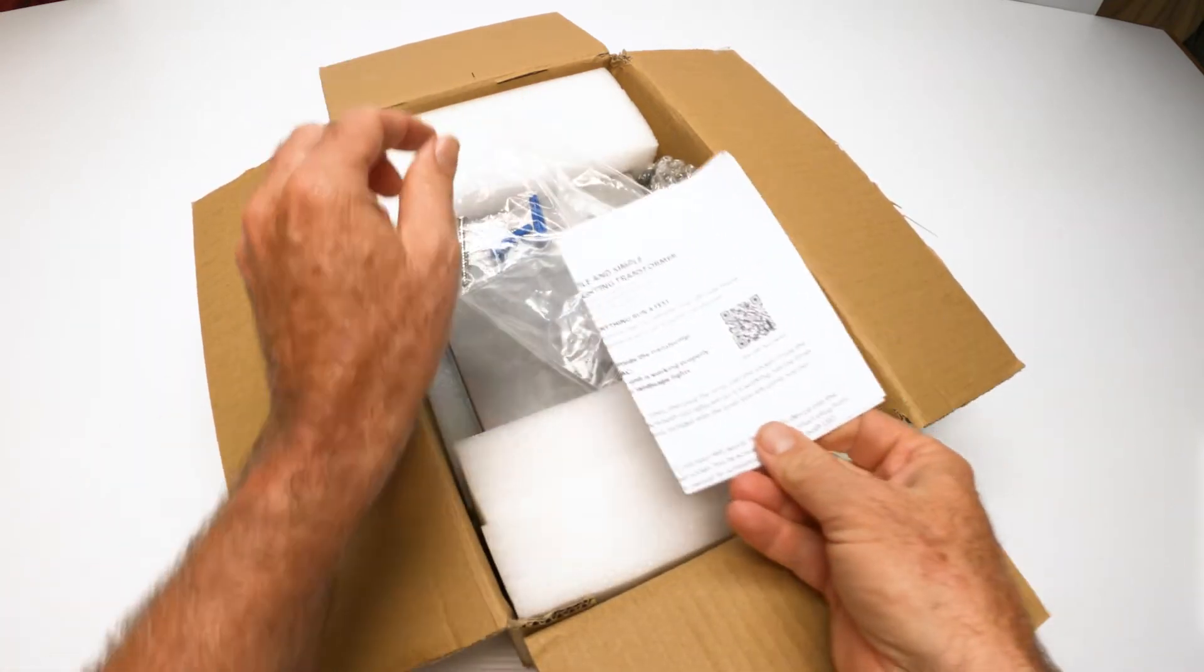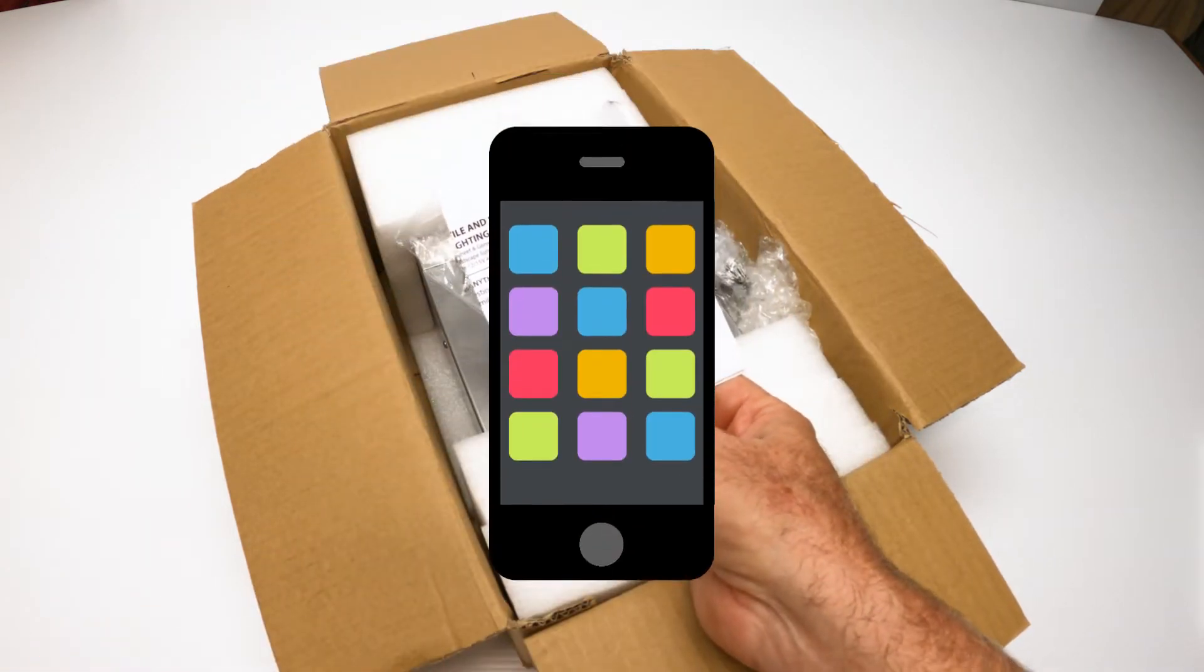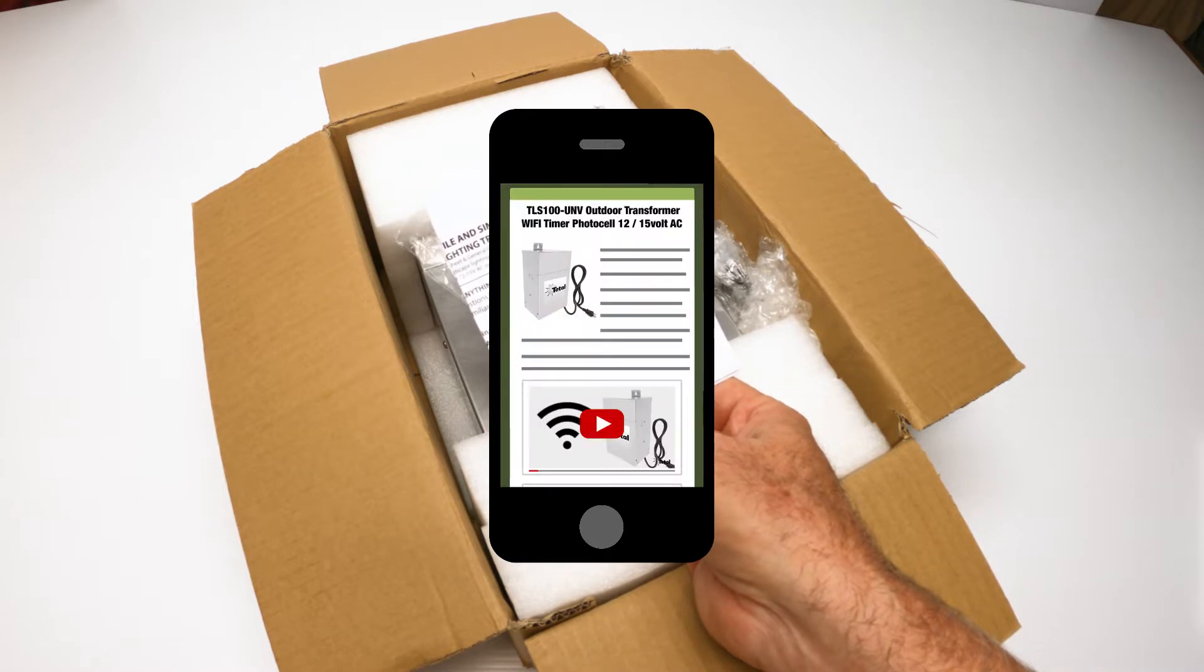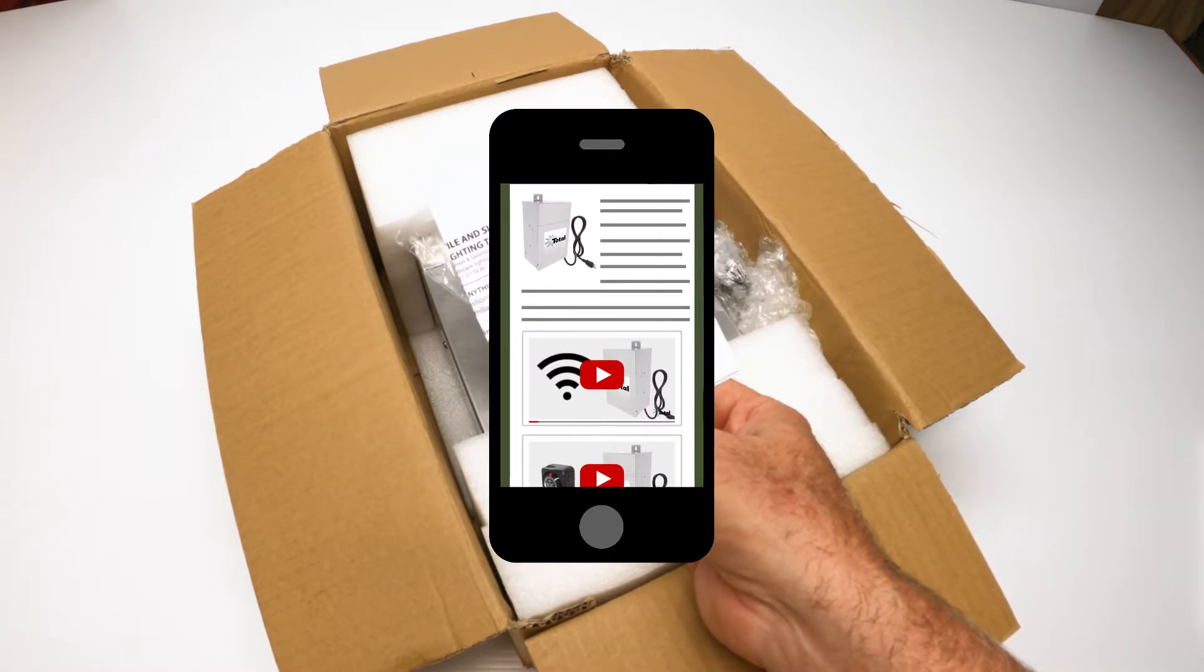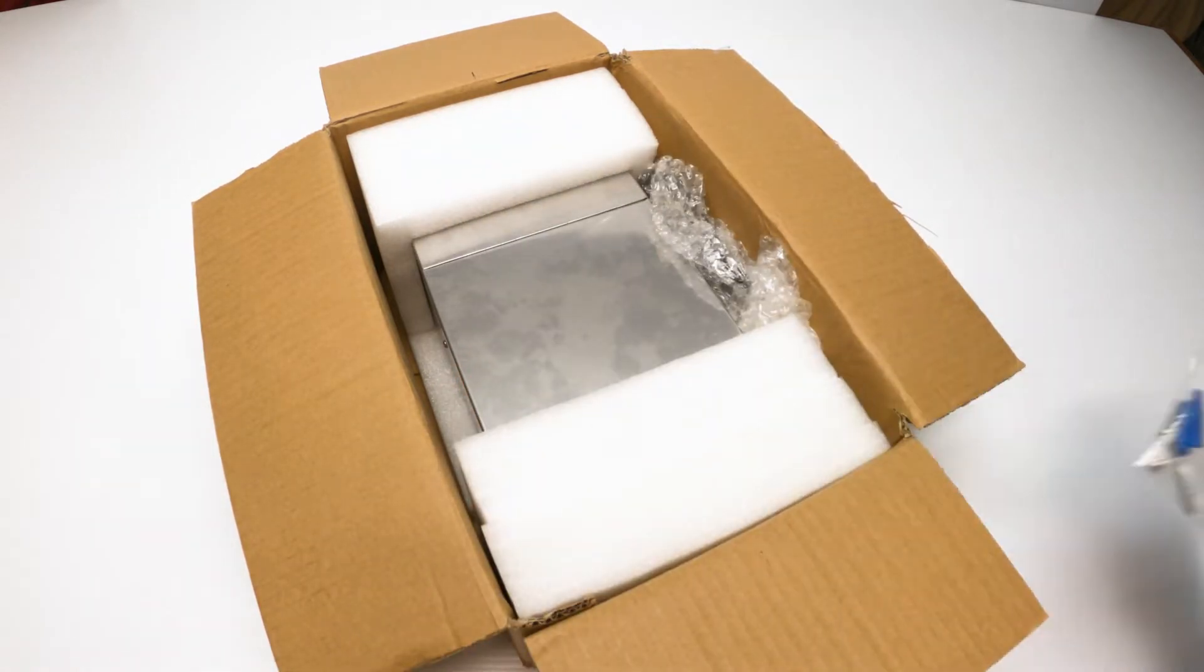Inside the bag is a really important QR code. That's it right there. If you put your telephone on that, your smartphone, you can scan that and it'll open up all the instructions and all the details and all the videos for this transformer.